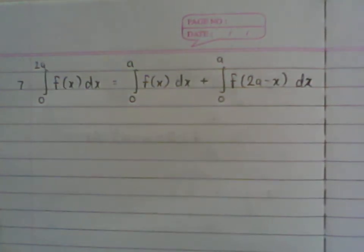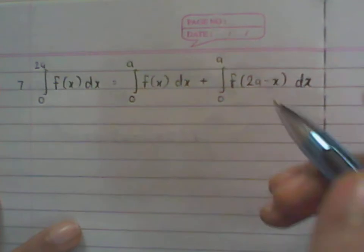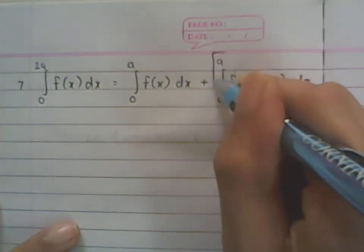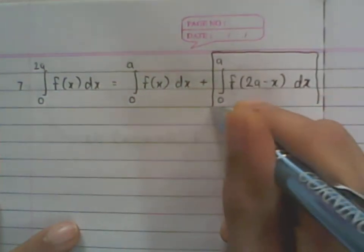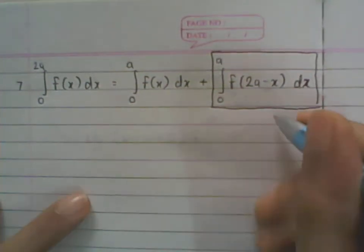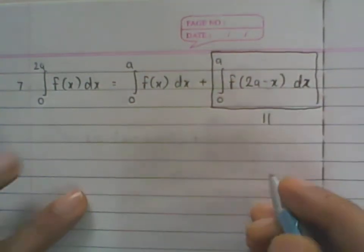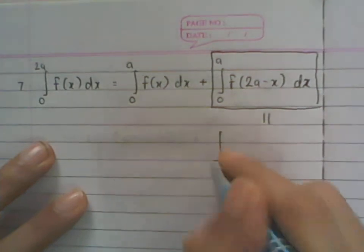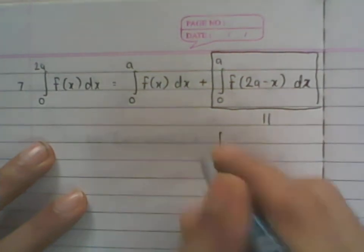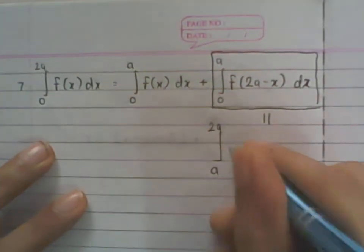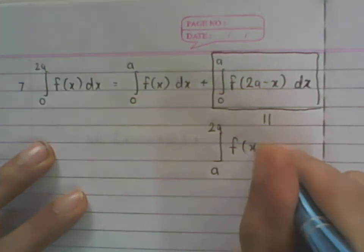Before proving this property, I will prove part of the property. I will prove that this particular integral is equal to some other integral. In particular, I will show that this is the same as the integral from a to 2a of f(x)dx.